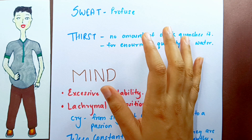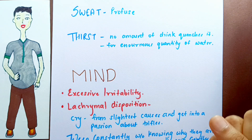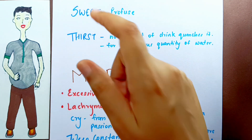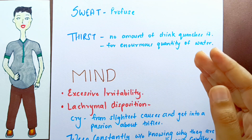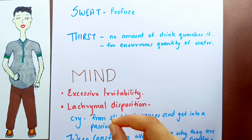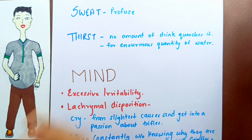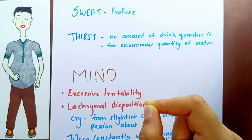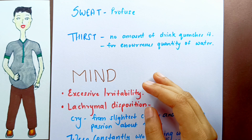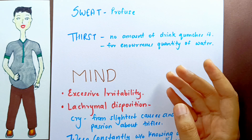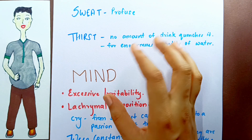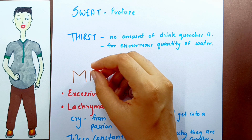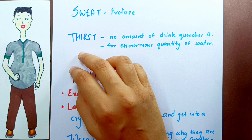In Natrium Muriaticum there is great profusion of perspiration — patients sweat so much as to be thoroughly drenched. Thirst is another peculiarity equally great — they drink enormous quantities of water and if offered a glass will invariably drain it dry. It is a thirst constantly upon them that no amount of drink can quench.